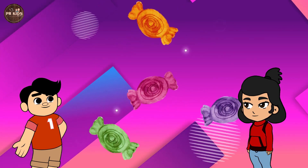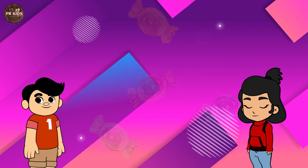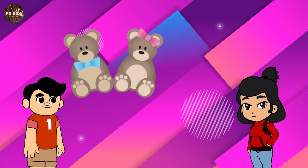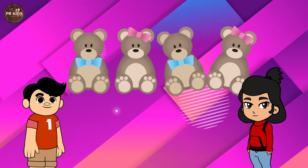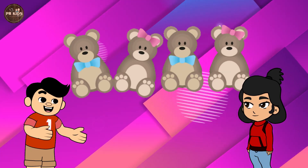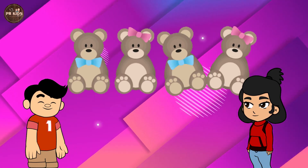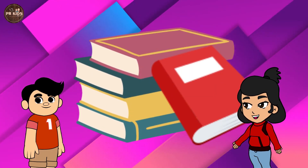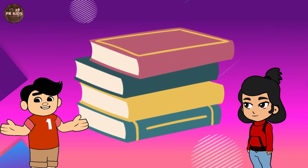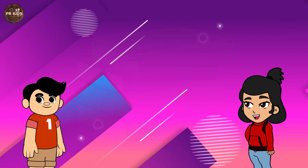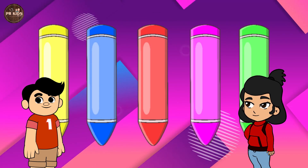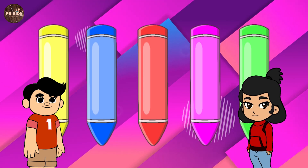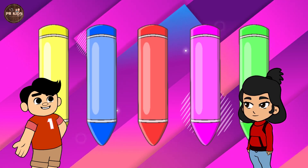Four Candies. If we add two more tall animals, how many do we have? Four Animals. If we take away one book, how many books are left? Four Books. If we add one more pencil, how many do we have now? Five Pencils.